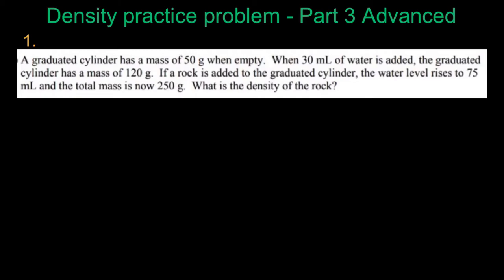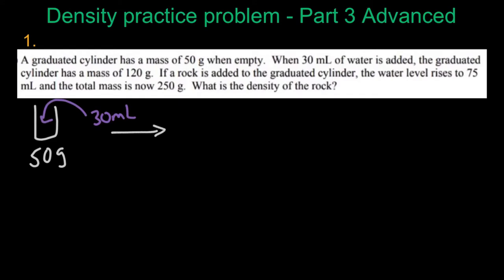Question one — I'm going to draw as I'm reading. A graduated cylinder has a mass of 50 grams. When 30 milliliters of water was added into the graduated cylinder, the mass of the graduated cylinder with the water inside became 120 grams with 30 milliliters of water.